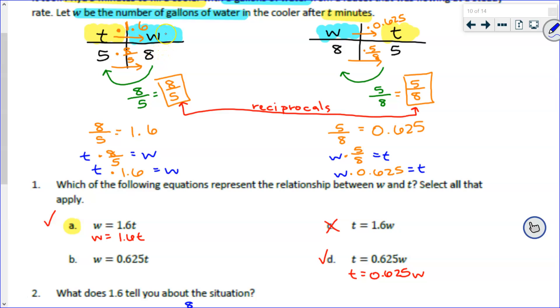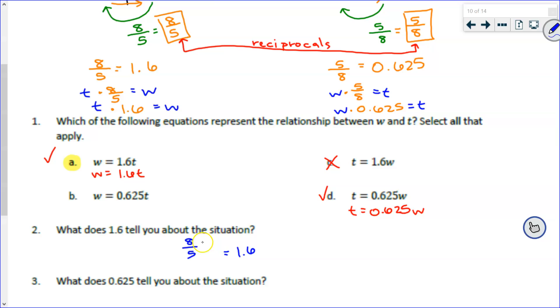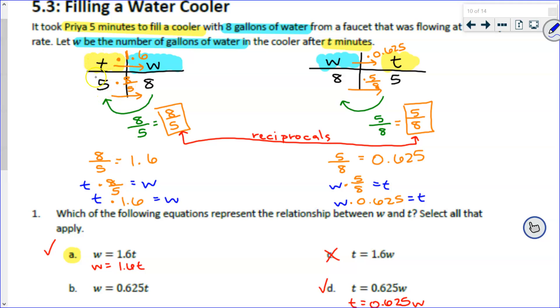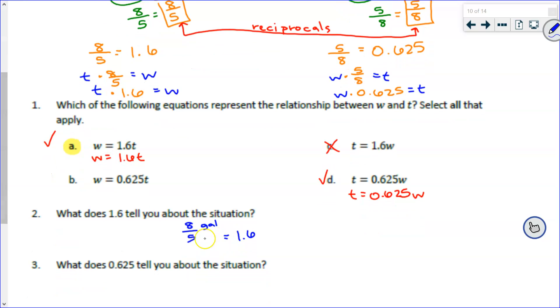But what does that 8 actually represent? Let's go even back further. 8 represents, Trinity, gallons of water. Good. So instead of just 8, I'm going to call it 8 gallons. And instead of just 5, what does that 5 actually represent? It says it's in the T column, but what does that T stand for? Dakota, minutes. So if I want to know what that 1.6 means, I have to work backwards to figure out how we calculated it. 8 divided by 5, but that's 8 gallons divided by 5 minutes. So focus on this right here. This 8 divided by 5 is the same as this 1.6. So what is left is just our units. And what are those units? That's gallons. What does this line right here mean? It means divide, right?